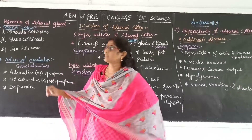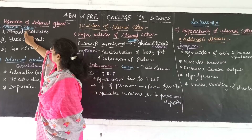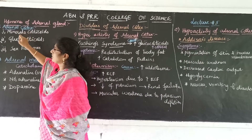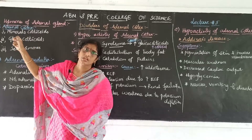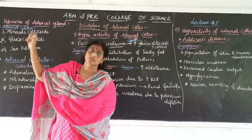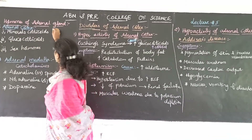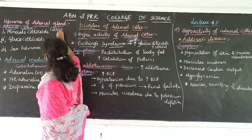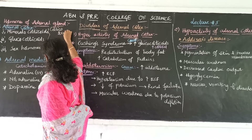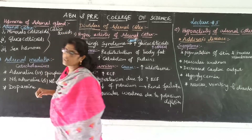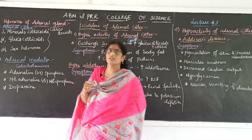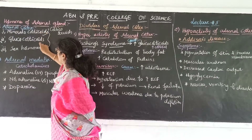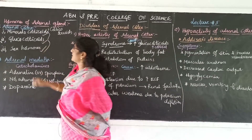We will talk about all these hormones. The adrenal cortex releases three different types of corticosteroids. These are called corticosteroids because they are steroidal in nature. The three types are mineralocorticoids, glucocorticoids, and sex hormones.